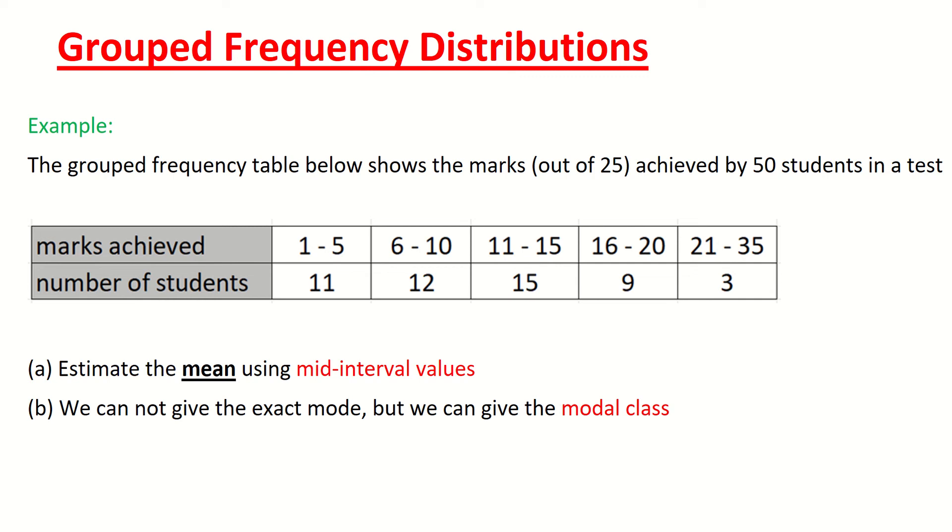We don't actually know how many students for instance got 8 marks. We just know that the 8 marks is located in here within the category 6 to 10 marks. We don't actually know how many people got 6 marks, got 10 marks, got 8 marks, got any mark. We just have broken them into what are known as intervals.